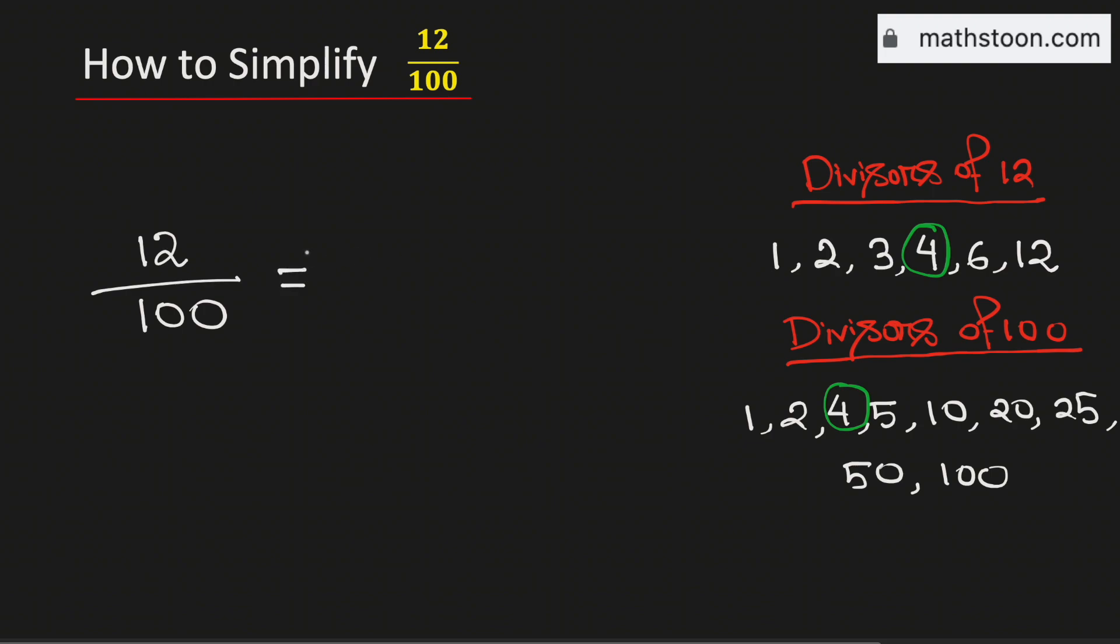Now to simplify this fraction, we will divide both the numbers 12 and 100 by their greatest common divisor, that is 4. Dividing them by 4, we will get 3 over 25.